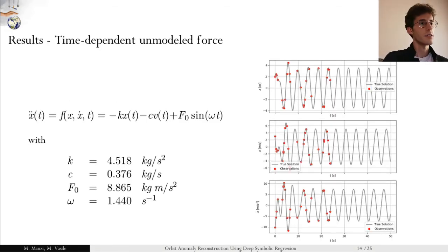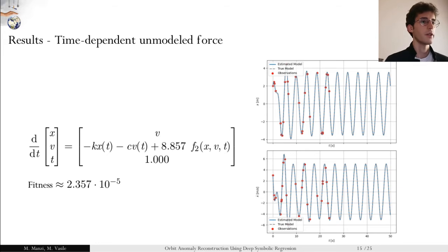Here are some results. The first one being a time-dependent unmodeled force as a perturbing term. This is simply a damped spring with a forcing term. We give the observations shown in the figure on the right. Using the algorithm, we are able to correctly identify the linear parameter, the F0 term. You can see the low value of the fitness. Of course, we also correctly identify the relation between the velocity and the position and the behavior of the time with respect to itself.